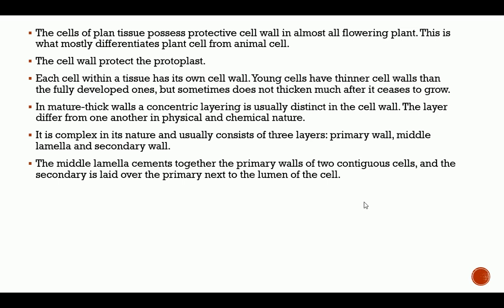Young cells have thinner cell walls than fully developed ones, but sometimes the wall does not thicken much after it ceases to grow. In mature thick walls, a concentric layering is usually distinct. The layers differ from one another in physical and chemical nature. It is complex in nature and usually consists of three layers: primary wall, middle lamella, and secondary wall.